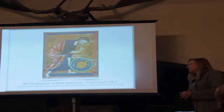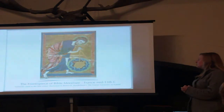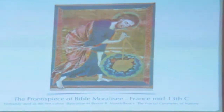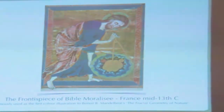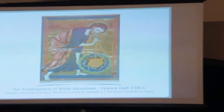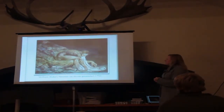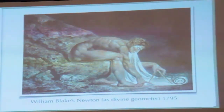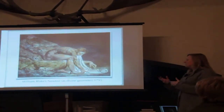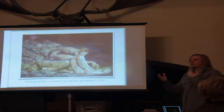Here is another frontispiece from a 13th century Bible — this is Christ as a geometer. It looks very fractal-esque, actually almost like Mandelbrot, and in fact it was used as the first colour illustration in Mandelbrot's book Fractal Geometry of Nature because he was so taken by the image. And here's another Blake — this is Newton as the divine geometer. Newton was obviously an instrumental physicist, but he was absolutely obsessed by alchemy and these ancient ideas of geometry being at the centre of human knowledge and a connection between humans and the divine.